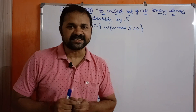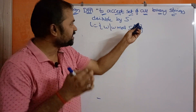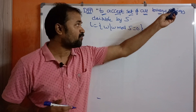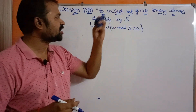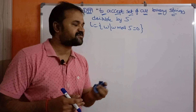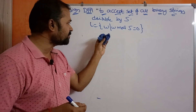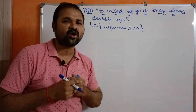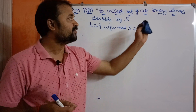Let us discuss designing a DFA to accept the set of all binary strings which are divisible by 5. That means the language is L = {w | w mod 5 = 0}.